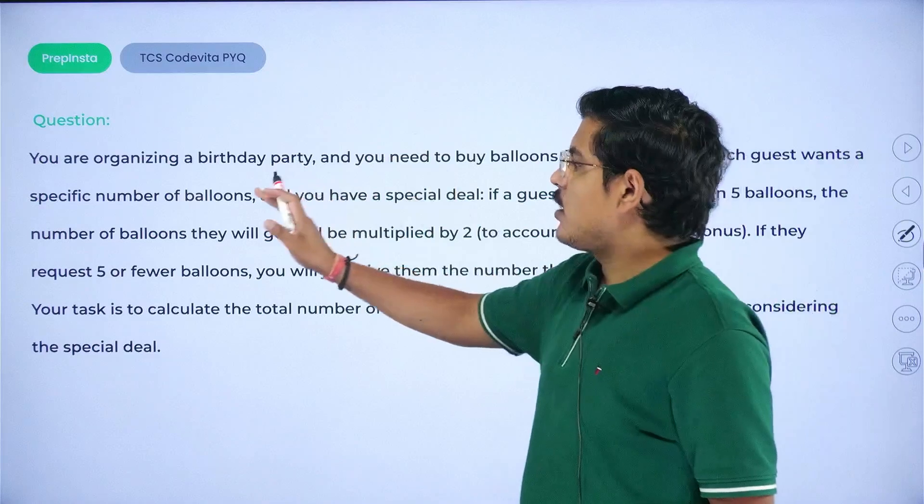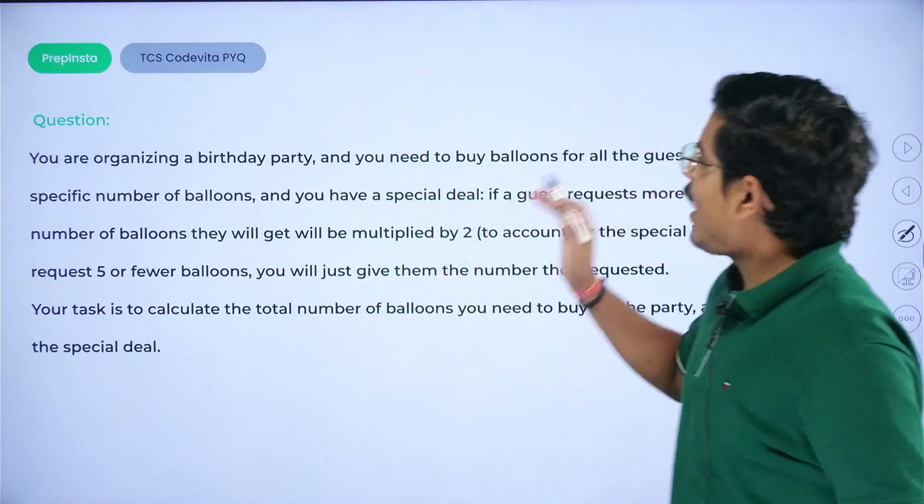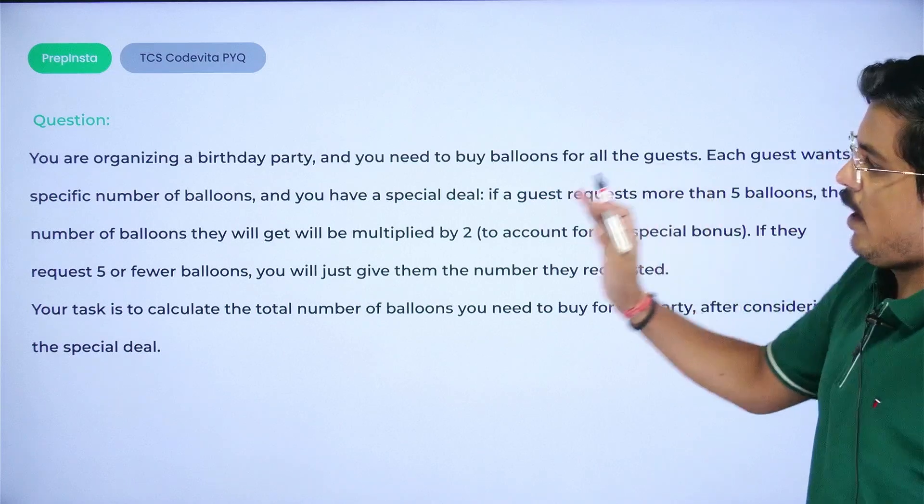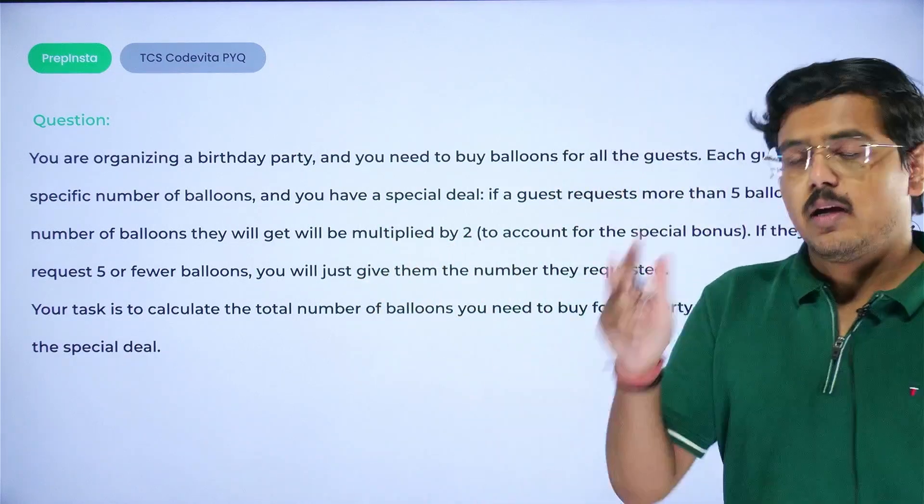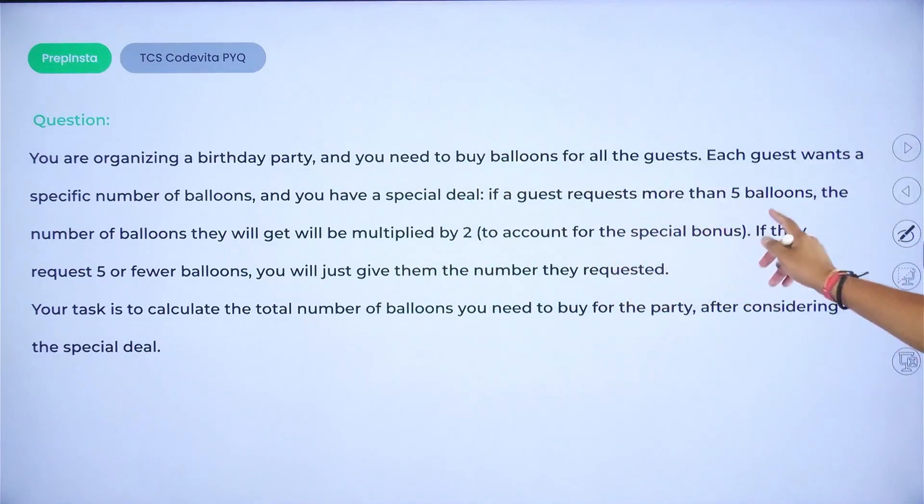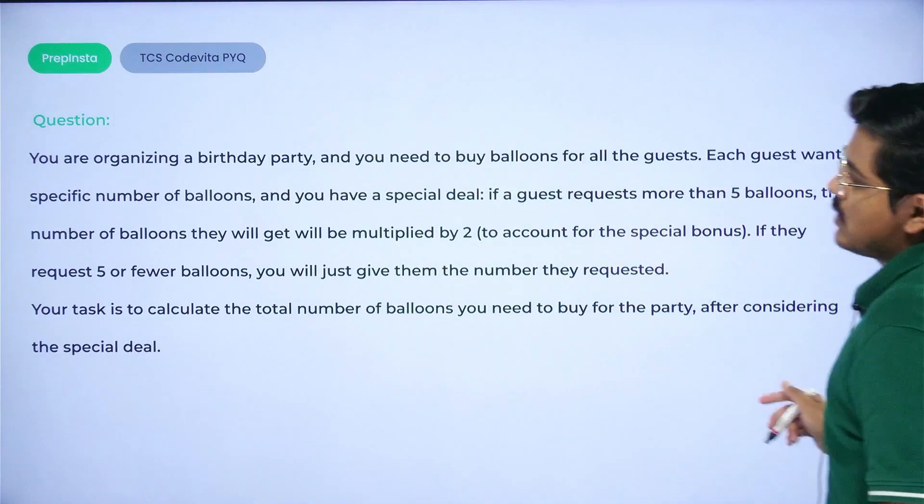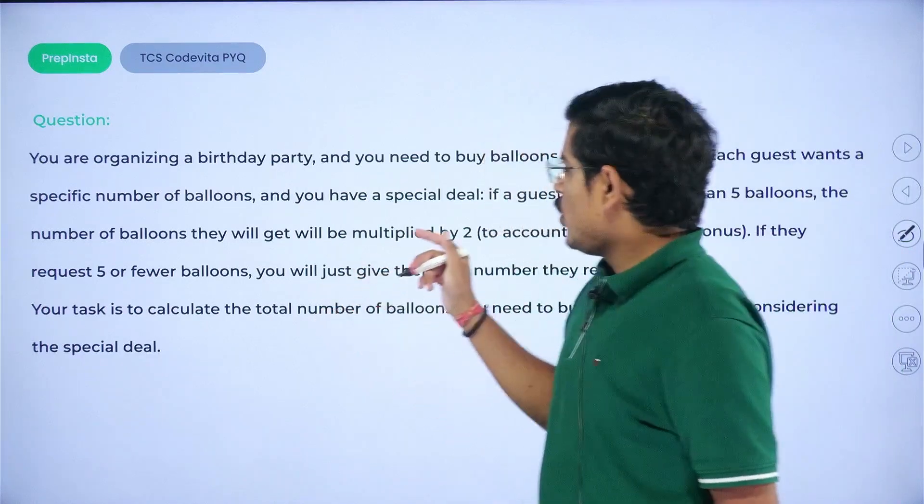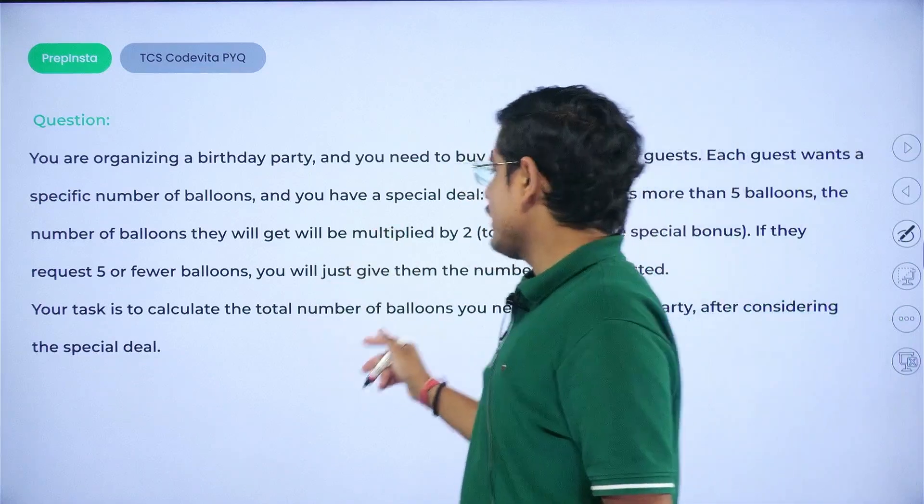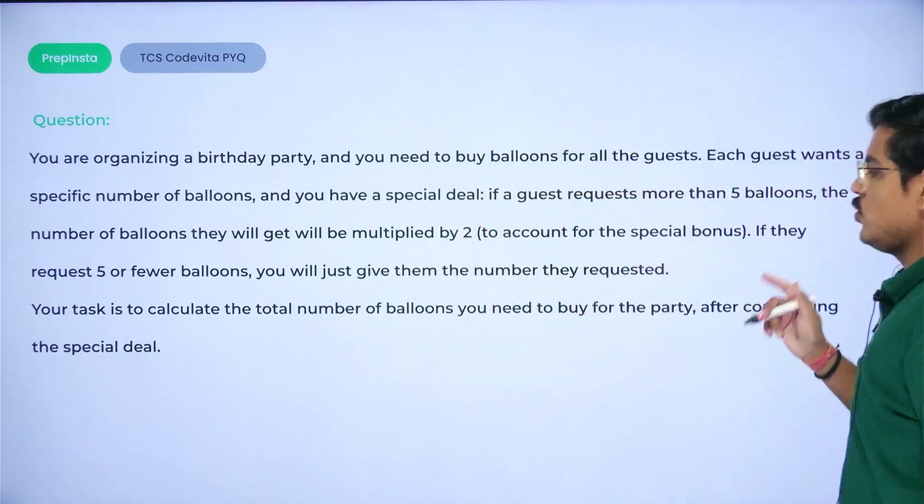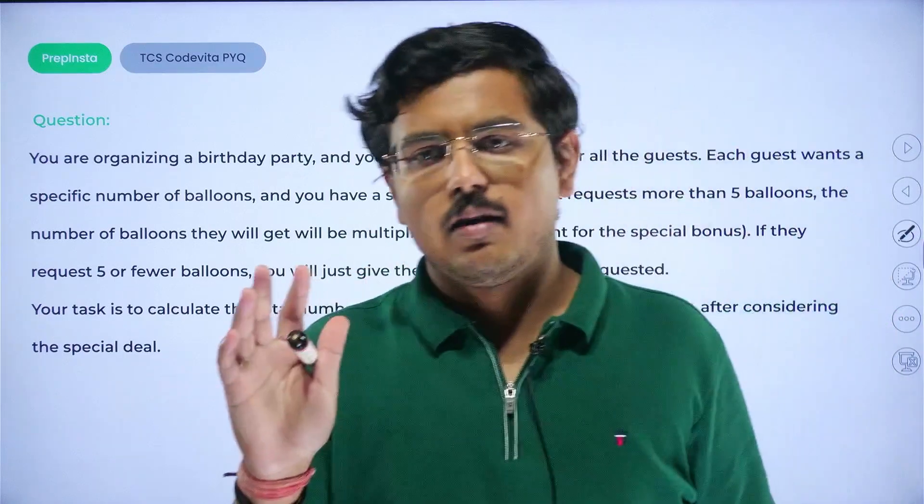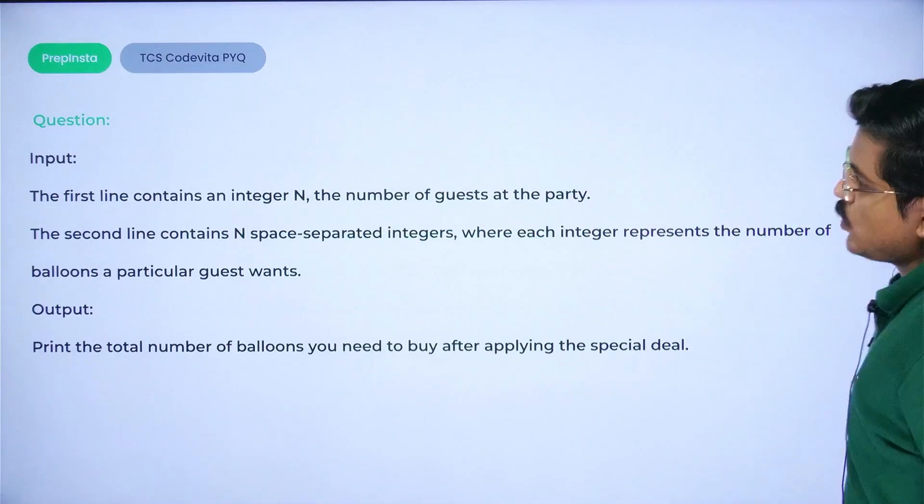Each guest wants a specific number of balloons and you have a special deal. If a guest requests more than five balloons, the number of balloons they will get will be multiplied by two. Remember I had given you a hint that this is a condition to account for the special bonus. If they request five or fewer balloons, you will just give them the number they requested. Your task is to calculate the total number of balloons you need to buy for the party after considering the special deal.